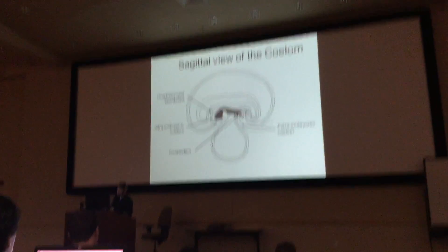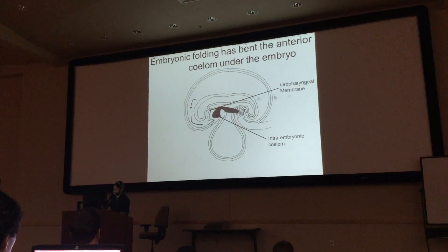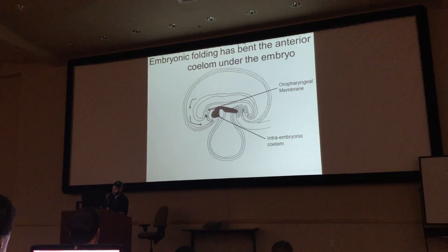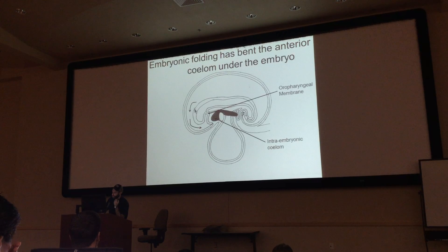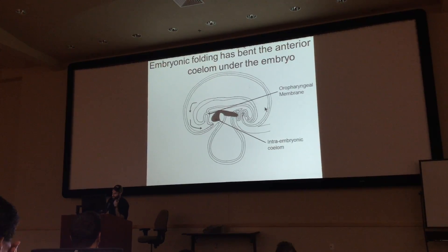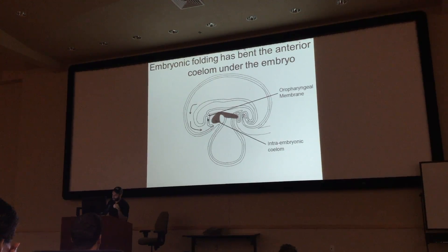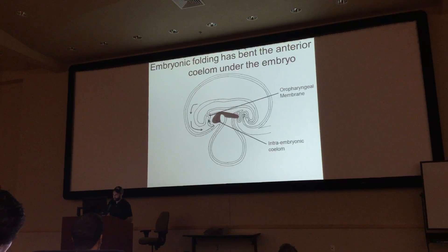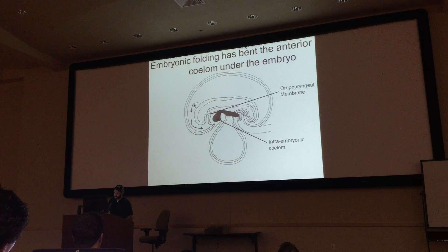He asked a question in class about what causes the oropharyngeal membrane to end up posterior to the anterior coelom. This is the anterior coelom, this is posterior — they're just cavities. The reason is that you bent so far anteriorly during development that your mouth ended up behind where the opening itself is, even though originally you started out flat.